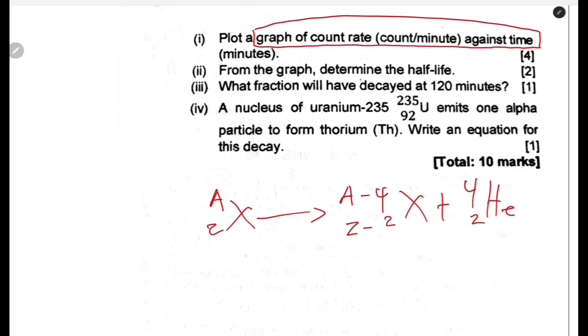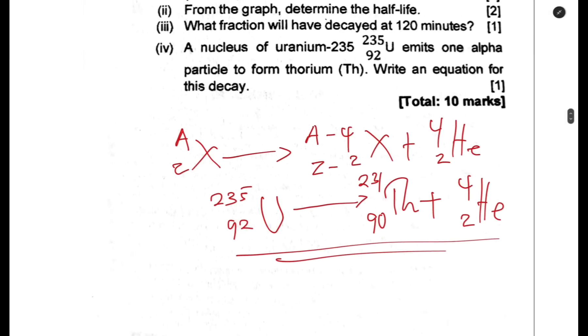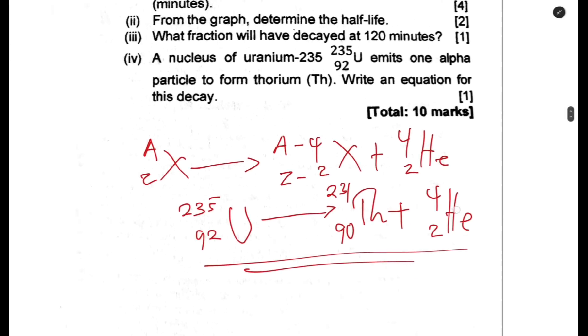Since we are looking at uranium, we can write 235, 92, U decays to thorium. The mass number reduces by four, so it's 231, then 90, plus 4, 2 helium. That is how it is going to be. What I'm urging you is that you need to know how to do this part. You don't know what you might find in an exam. We can end here and see you in the next one.